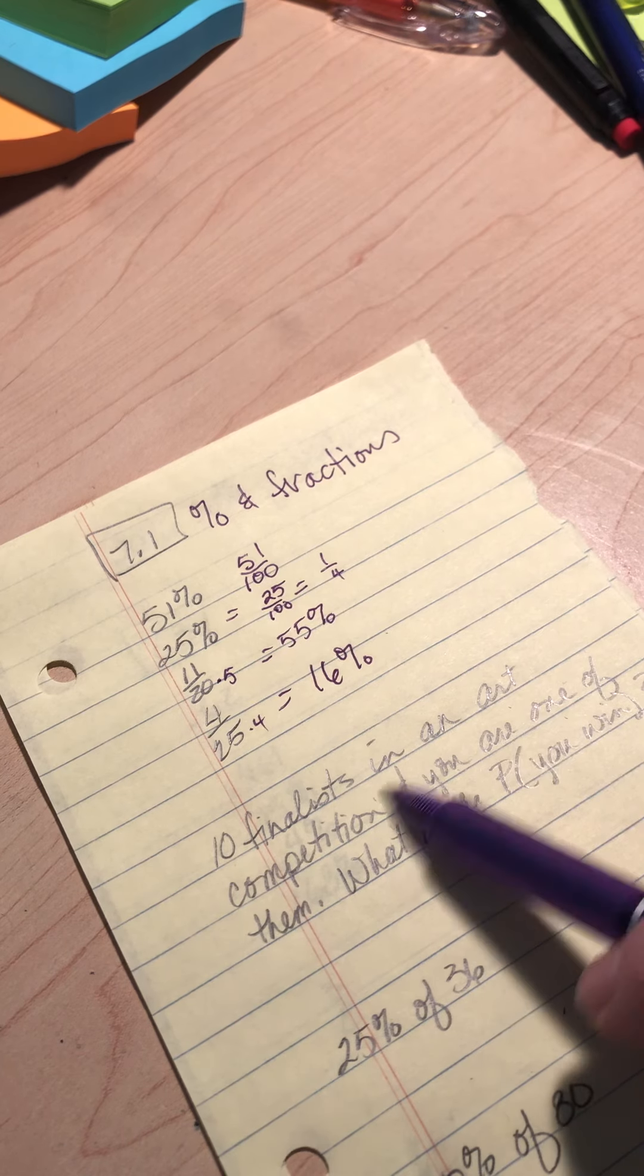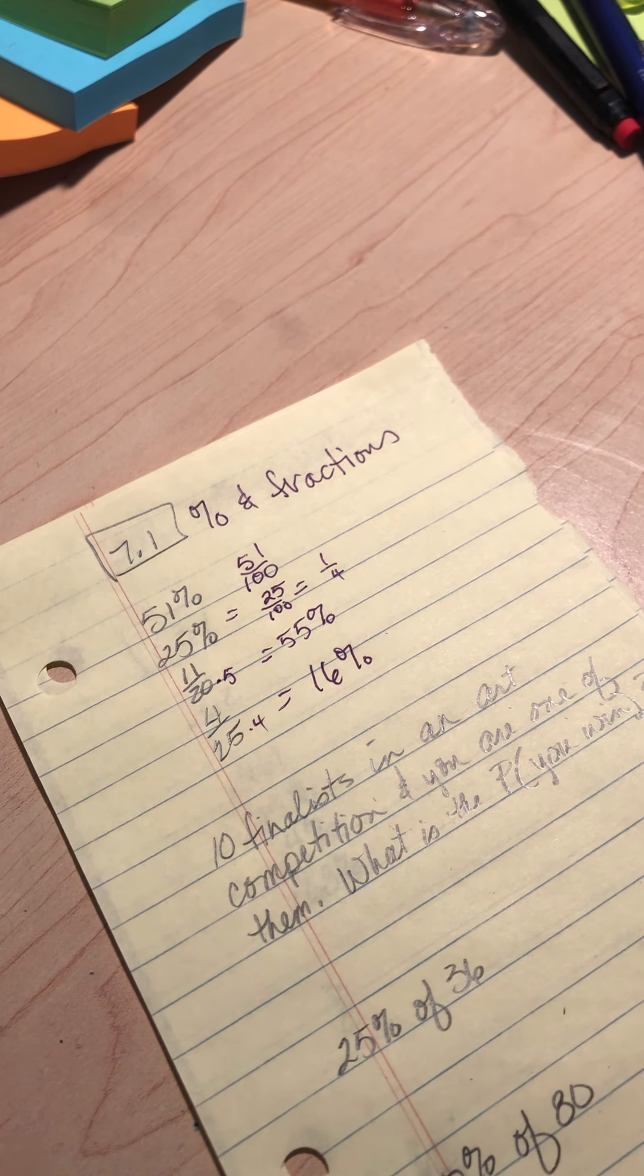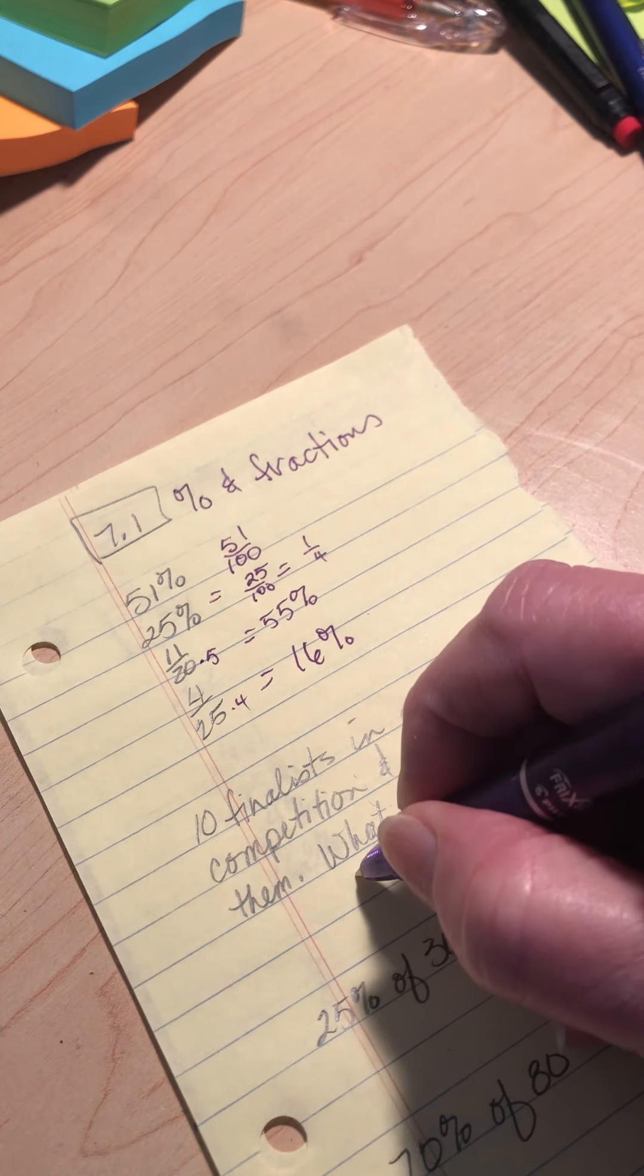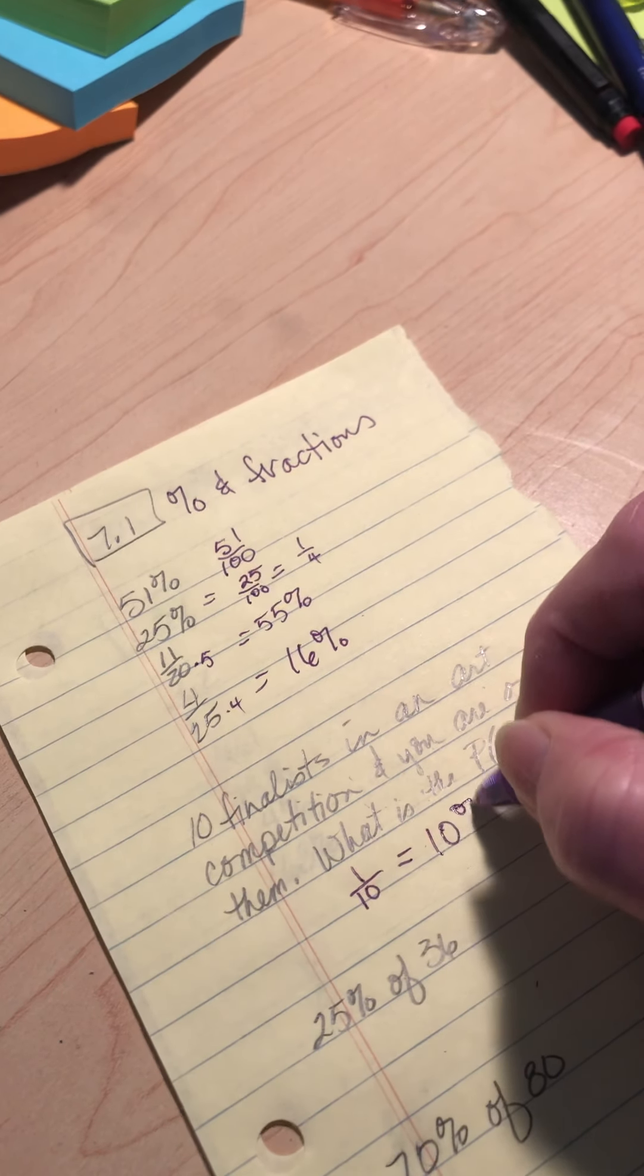If there were 10 finalists in an art competition and you were one of them, what's the probability that you'll win? Well, the probability is 1 out of 10, which is 10%.